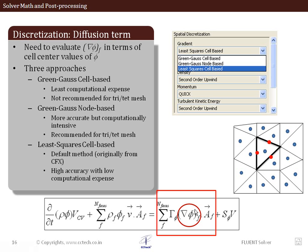For the diffusion term, the gradient at cell faces can be calculated using three methods: Green-Gauss cell-based, Green-Gauss node-based, and the least squares cell-based method. The least squares cell-based method is the most accurate with least computational effort and is now the default in Fluent. Previously, quad/hex meshes used the Green-Gauss cell-based method, and tet meshes required the more expensive Green-Gauss node-based method. The least squares cell-based method is recommended unless your organization's practices differ.